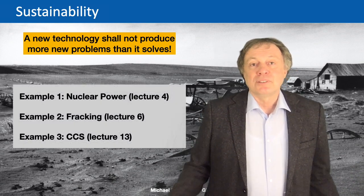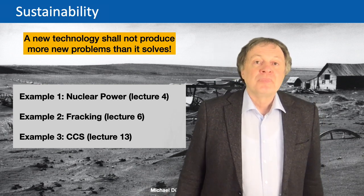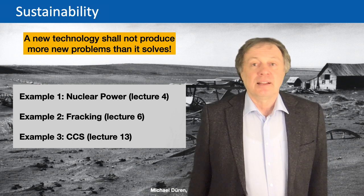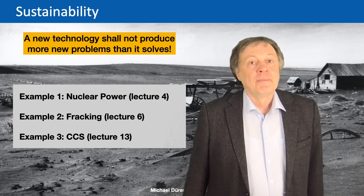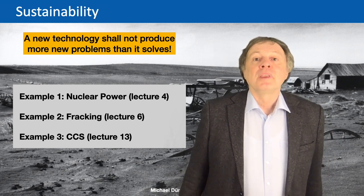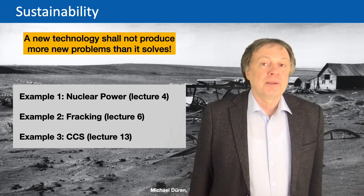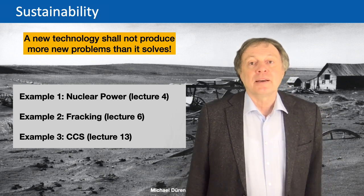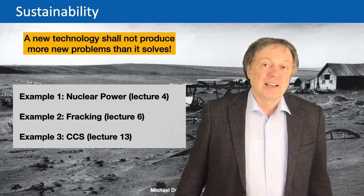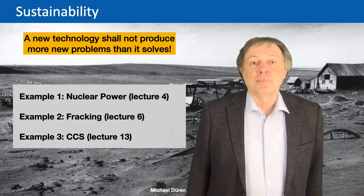In my previous lectures we had already two technologies where I myself said they produce more problems than they solve. Example number one was nuclear power, as explained in lecture four. Example number two is fracking, as explained in lecture six. And today in lecture 13 we discuss CCS, and to my mind we have the same problem here. We should not introduce it at large scale because there's a big chance it produces new problems.